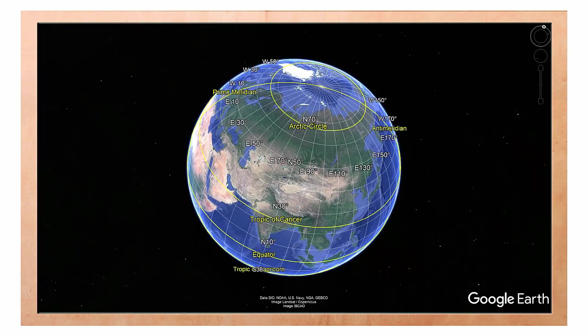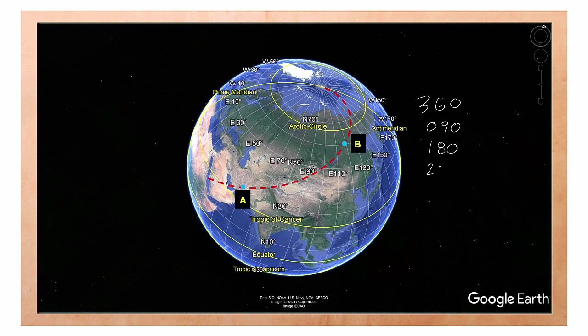This picture was taken from Google Earth. If you want to fly from A to B and maintain a constant track, you will actually fly a curved track represented by the red dotted line. A rhumb line track is actually a spiral track that originates from the north and south poles, unless it is on a heading of 360, 090, 180, or 270 — in other words, a cardinal heading.